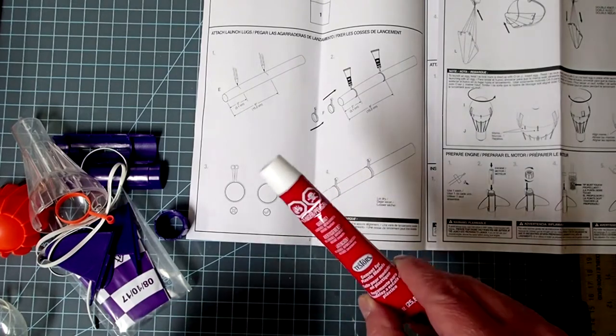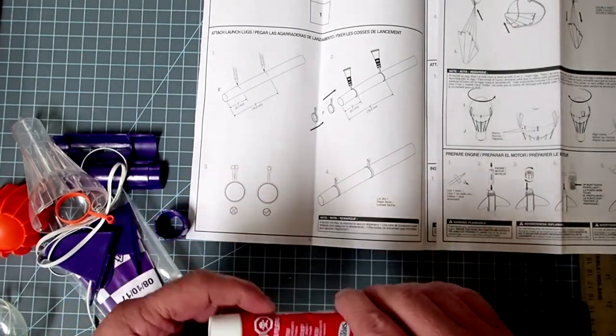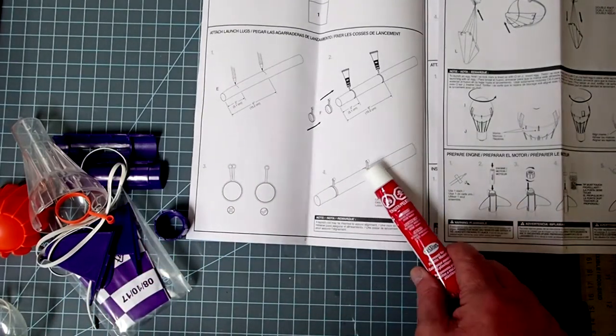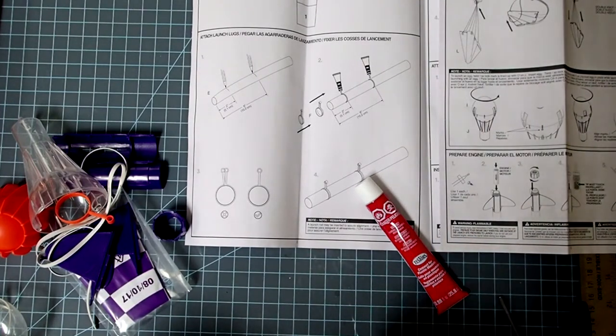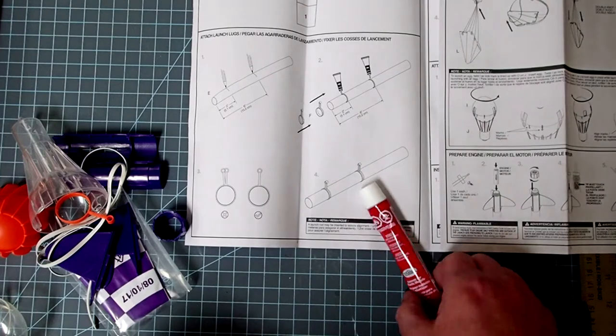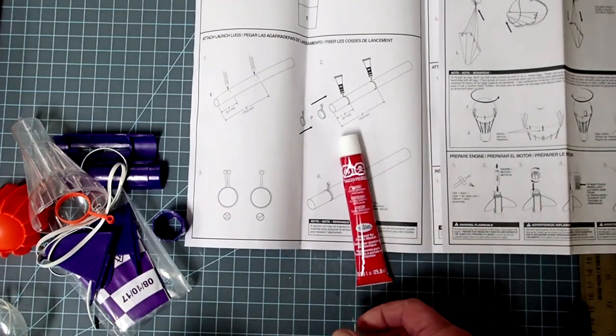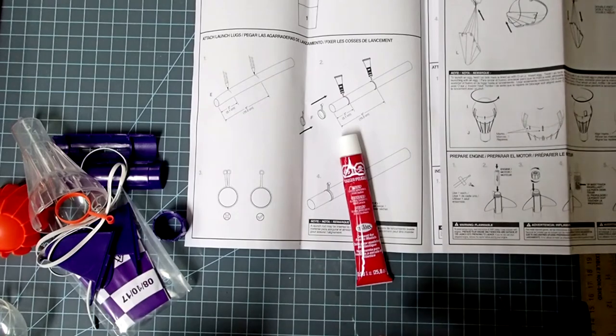For this one, I'm going to use the thicker type here. If you have the thinner type, that will work too for most of the plastic to plastic bonding. But there are a few cases where we need to bond plastic to cardboard. And for that, you'll either want the thicker glue like this, or you'll want some super glue. So we will need a little bit of white or wood glue to do the shock cord, but that's about it.